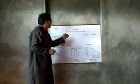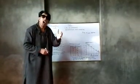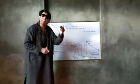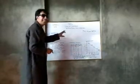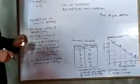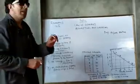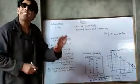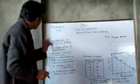So from the meaning we come to know that the law of demand has importance in showing the inverse relationship between price and demand. Now we are coming towards the assumptions of the law of demand. If these assumptions are fulfilled, the law of demand is applicable.